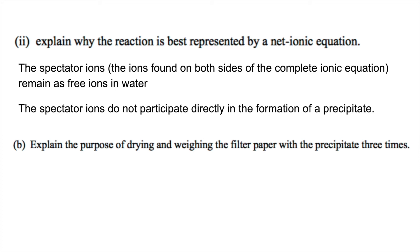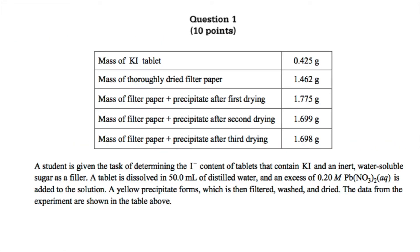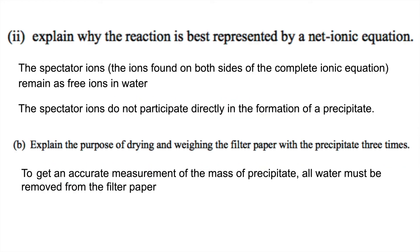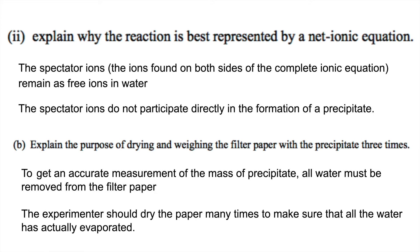And then part B says, explain the purpose of drying and weighing the filter paper with precipitate three times. So if you look at this description, they had to dry the filter paper and precipitate. And each time they dried it, the mass decreased by a little bit. And in the paragraph below, it also says that the precipitate was filtered and washed. Obviously, because this whole thing is wet, there's going to be some water making up that mass. And to get an accurate value for the mass of only the precipitate, you got to remove all that water. And that can be accomplished by simply evaporating all the water by drying it many times.